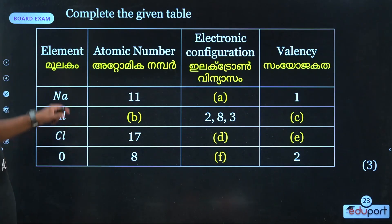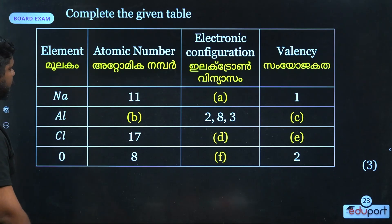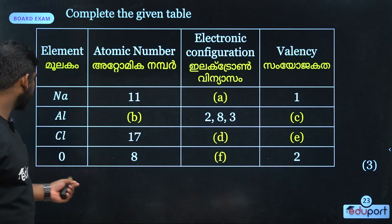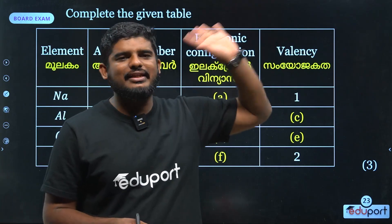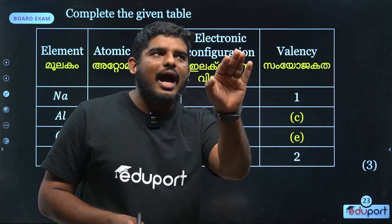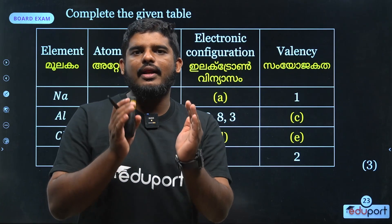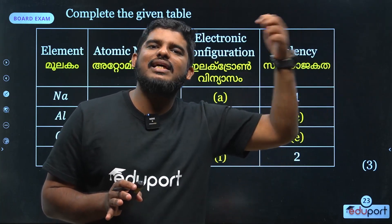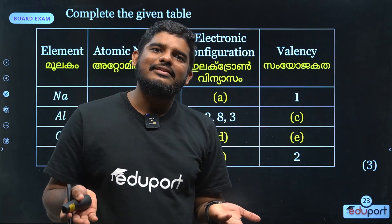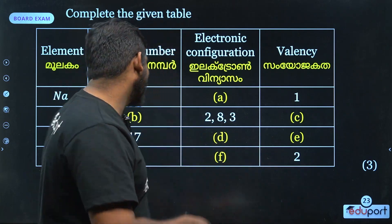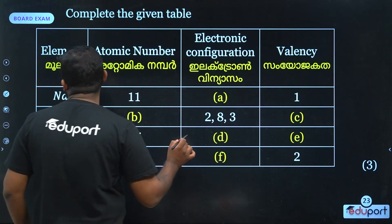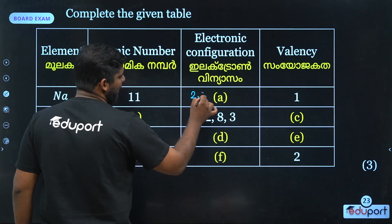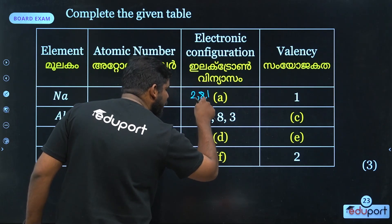Next, we will complete the table: element, atomic number, electronic configuration, valency. Valency is determined by the number of electrons in the outermost shell. Sodium: atomic number 11, electronic configuration 2, 8, 1. The outermost shell has 1 electron, which is less than 4, so valency is 1.